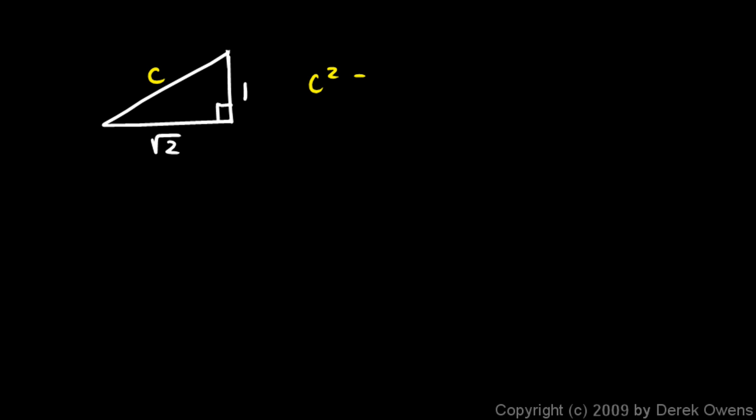We'll call it c. Well, c squared has to be this squared plus that squared. So that's going to be the square root of 2 squared plus 1 squared. And the square root of 2 squared is just 2. And 1 squared is 1. So 2 plus 1 is 3. So if c squared is equal to 3, then c has to be the square root of 3.